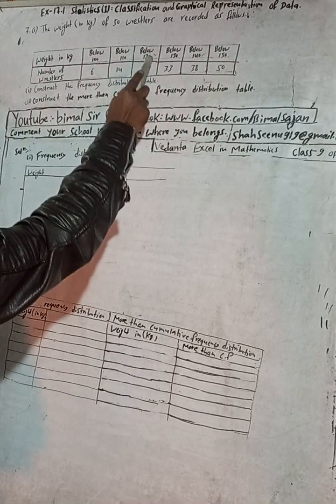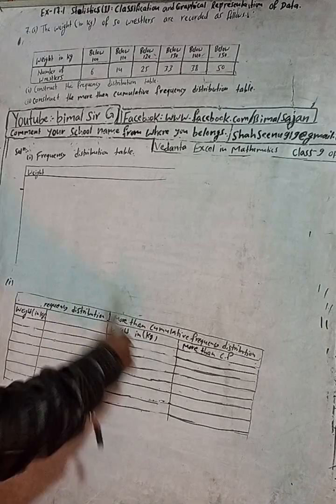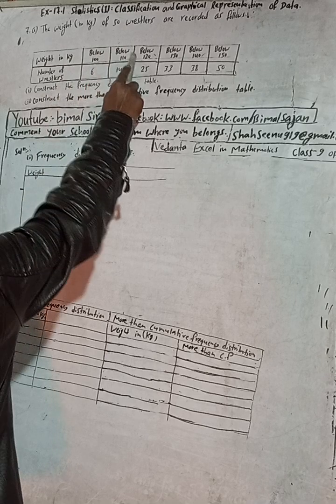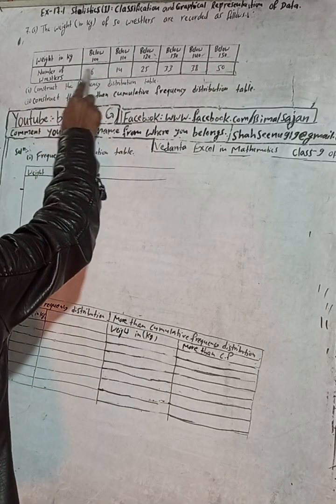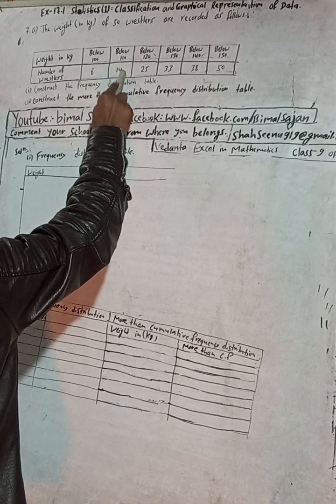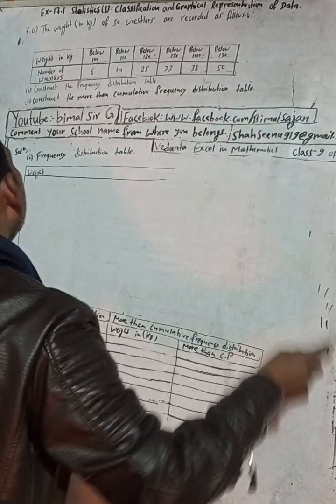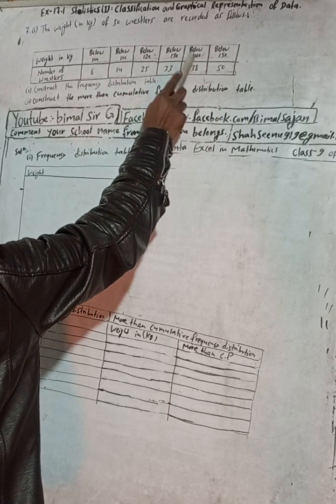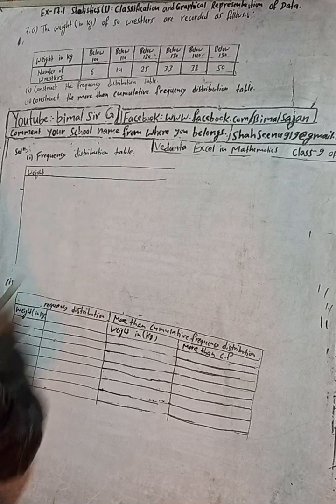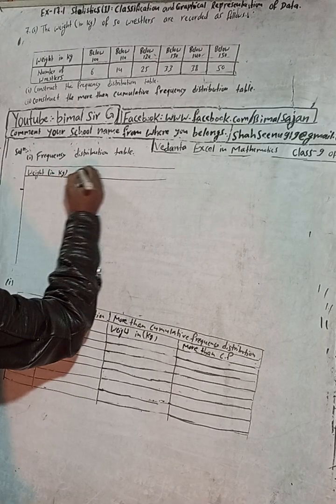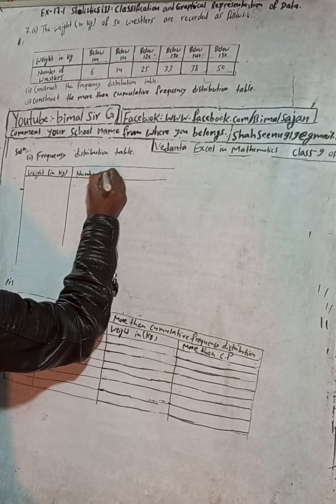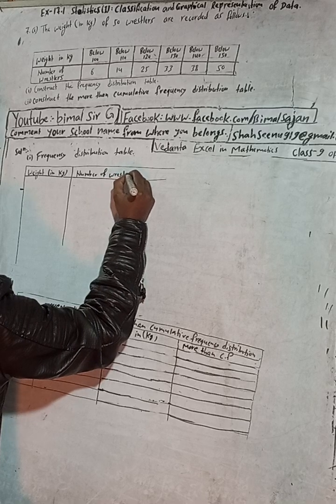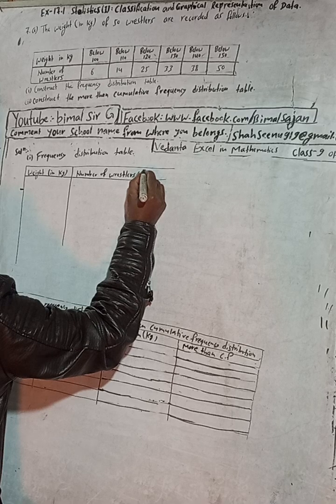So this is the weight of 50 wrestlers. The weights given are: below 100, below 110, below 120, below 130, below 140, and below 150 kg. The number of wrestlers with weight below 100 is 6, and below 110 is 14, and so on. We have to construct a frequency distribution table with columns: weight in kg and number of wrestlers (frequency).